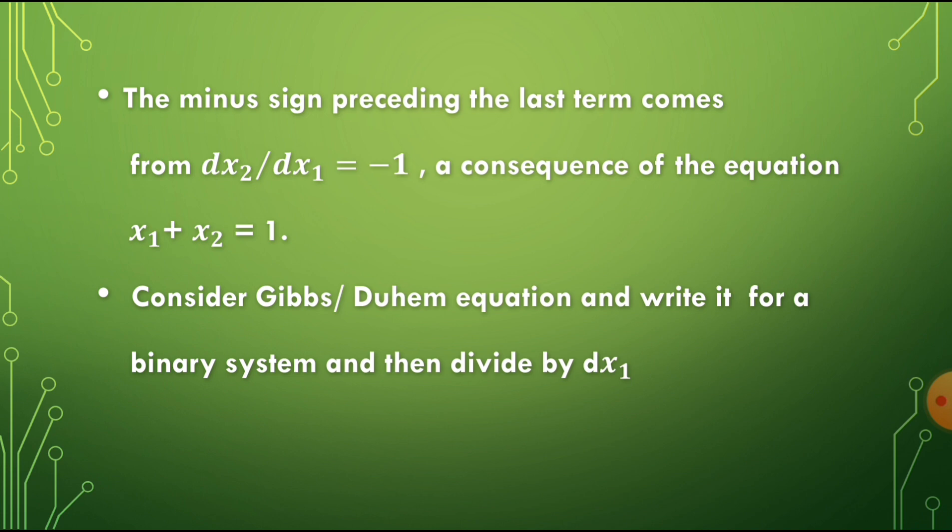This is a consequence of the equation x1 plus x2 equal to 1. When you differentiate, dx1 plus dx2 becomes 0, so dx2 by dx1 becomes equal to minus 1. Now consider the Gibbs-Duhem equation written for a binary system and then divide it by dx1.